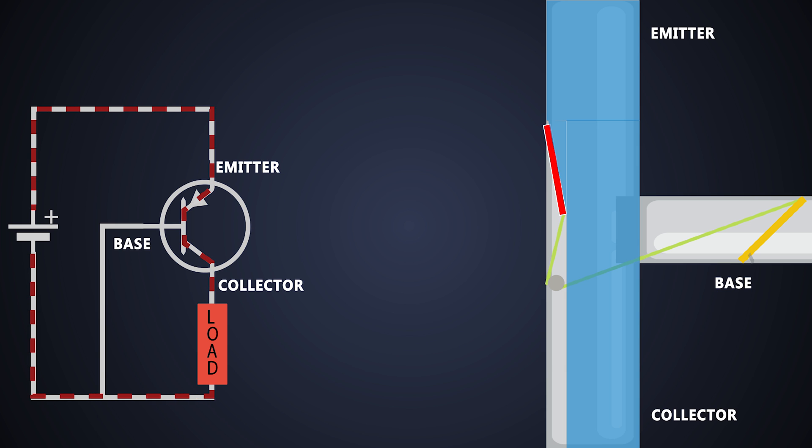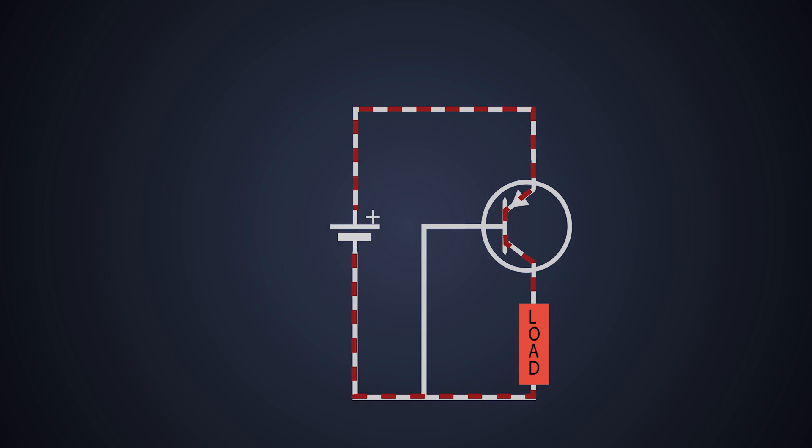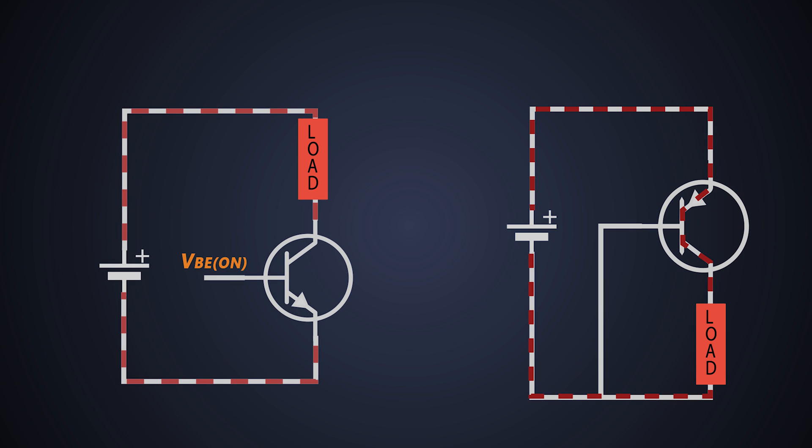So these were the analogies of PNP and NPN transistors. We can represent our transistor with diode analogy as well. This is the analogy for NPN transistor and this is for PNP transistors.